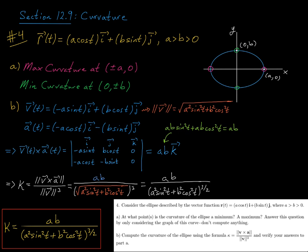So when we compute the curvature, we want the magnitude of v cross a, which is just ab, and note here that a and b are both positive constants, so ab is a positive constant, so we don't need an absolute value here, and then we're going to divide by the magnitude of v cubed.